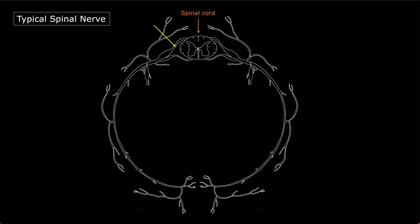This is a dorsal root, which is placed posteriorly. And within this dorsal root, there is a part which has been swollen. This swollen part, located within the dorsal root, we call the dorsal root ganglion.